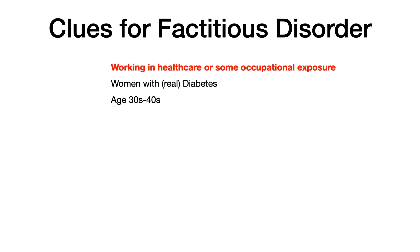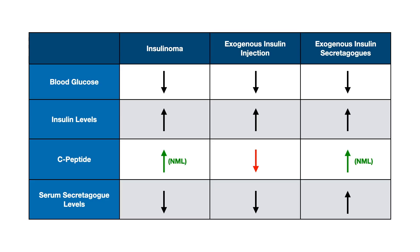This is high yield and it's complicated for a lot of students — but it doesn't need to be. Just remember: if you see a C-peptide level that's normal or increased, don't automatically assume insulinoma. Good luck.